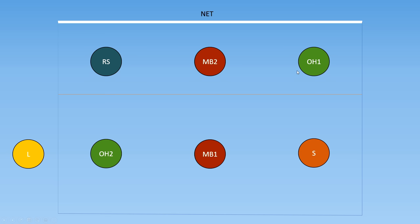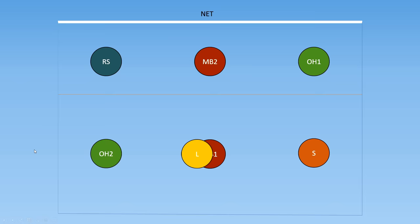The number 1 after some of these players' positions denotes the two hitters who are closest to the setter, and the number 2 denotes the two hitters who are further away from the setter. We also have the libero, or the defensive specialist, who will generally be subbing for the middles in the back row.